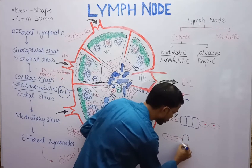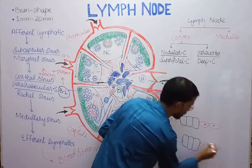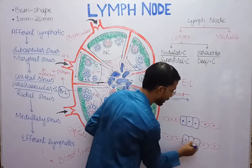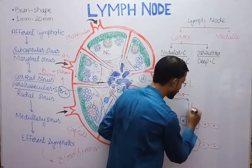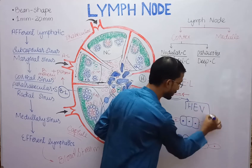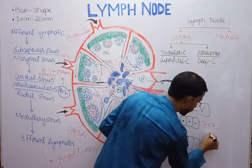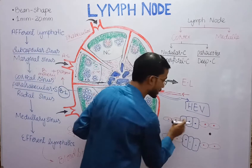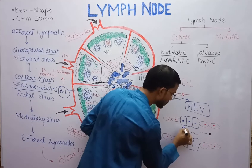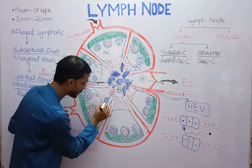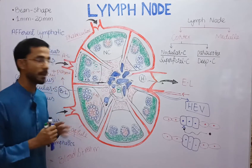Normally, flat epithelial cells are present in the venule, but at several points in the paracortex region, cuboidal cells are present between the epithelium. This special venule is called the high endothelium venule, and it has two main functions.